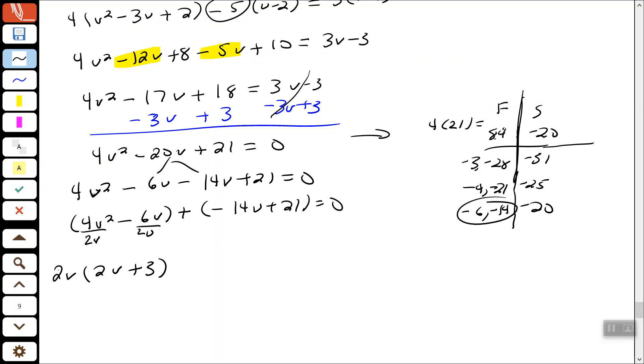And remember, if we have a negative on that third term there, we need to divide by a negative number. The GCF of 14 and 21 is 7. So I'm going to factor out a negative 7 so I can make sure my signs match up. So that makes 2V minus 3.